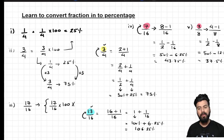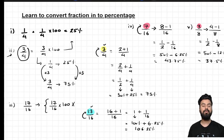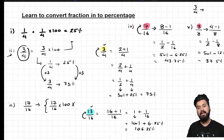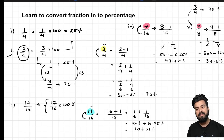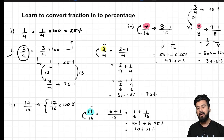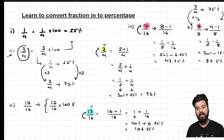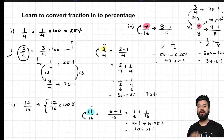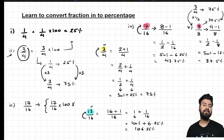Notice that if you already know 3/4 is 75%, you can use that to find 3/8 directly: 3/8 is half of 3/4, so taking half of 75% gives 37.5% immediately. This demonstrates how knowing key fraction-percentage equivalents allows you to break and convert any fraction elegantly.